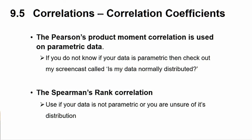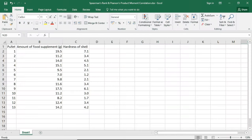The Pearson's Product Moment test is used on parametric data. If you do not know if your data is parametric, then check out my screencast called 'Is My Data Normally Distributed?' If your data is not parametric, or you are unsure, then you can use the Spearman's Rank Correlation. So let's do the tests.